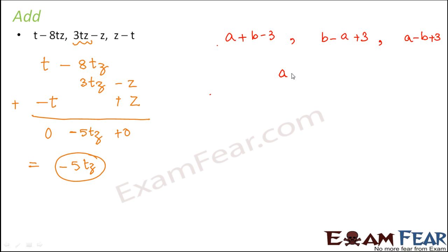In a similar way, we will try to do this as well. a plus b minus 3. Now let us write the second expression just below this, provided we write all the a's together, all the b's together, and all the 3's together. So in this case, you have plus b minus a and plus 3.